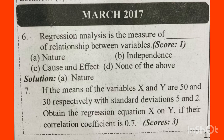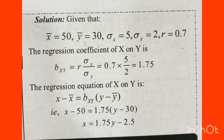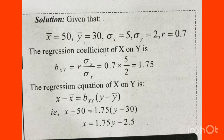We have x̄ and ȳ — the mean values — that is 50 and 30. We have standard deviations: sigma x and sigma y. Sigma x is 5 and sigma y is 2. The correlation coefficient is 0.7. We have two regression coefficients to find: x on y and y on x.